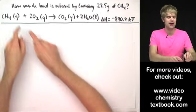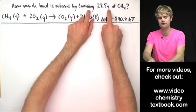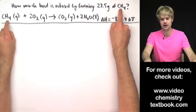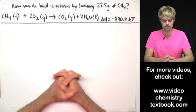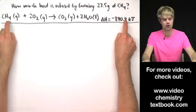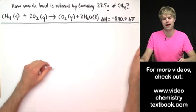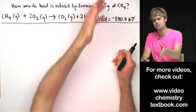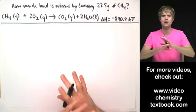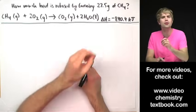We want to calculate how much heat is released by burning 27.5 grams of methane or natural gas. When doing calculations that use chemical equations like this with a lot of math, measurements in grams like 27.5 grams are not particularly useful — I really want moles.